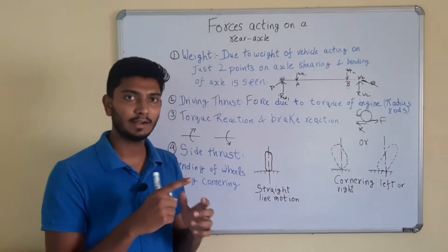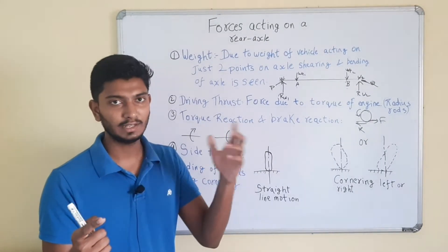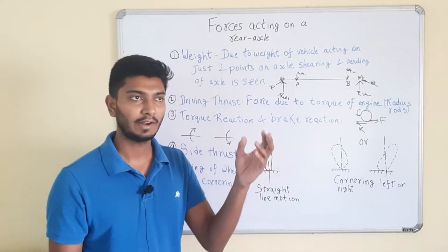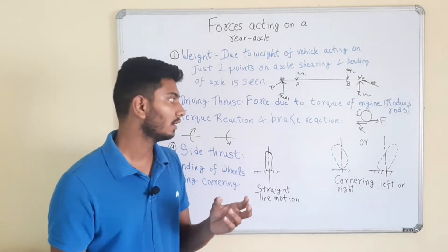This driving thrust is controlled with the help of members called radius rods. These radius rods are attached to the chassis. One end is attached to the chassis and the other end is the axle.